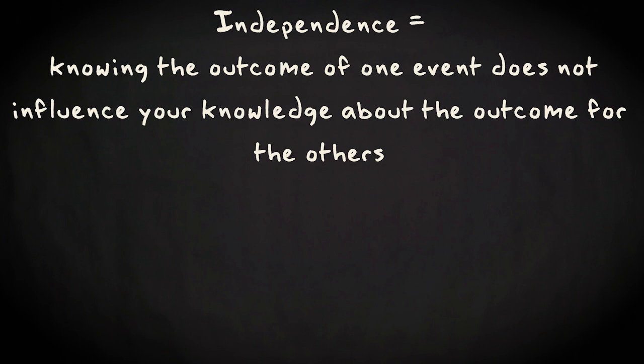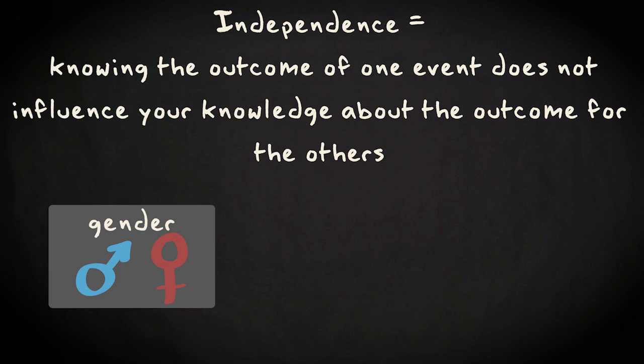Independence between random events means that knowing the outcome of one event does not influence your knowledge about the outcome of the others. In the example it means that if you'd know about the gender of a person, it would not influence the probabilities for that person's activities.